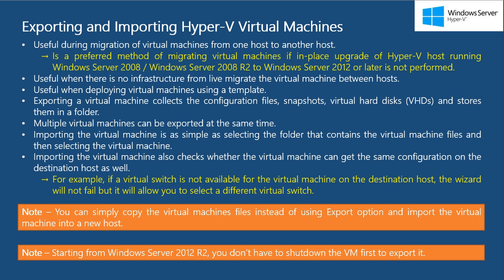So when do you export or import a virtual machine? One use case is when you want to migrate virtual machines from one host to another and there is no infrastructure set up to perform a live migration. For example, you may have two standalone Hyper-V hosts with no cluster or live migration set up and you want to move some VMs from one host to another. It can also be used when you are upgrading your Hyper-V environment from Windows Server 2008 R2 to Windows Server 2012 and you don't want to perform an in-place upgrade.